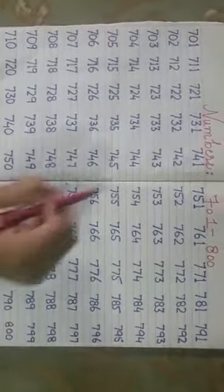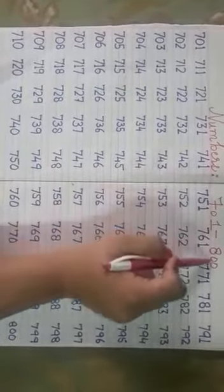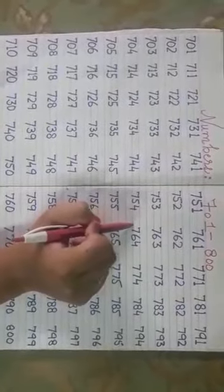You have to write numbers 701 to 800 in your maths fair notebook.